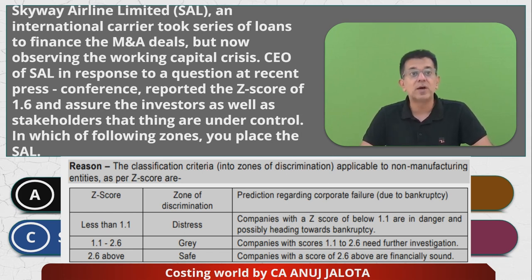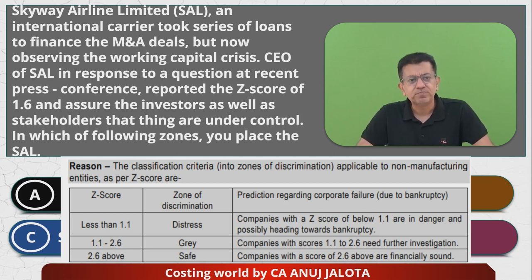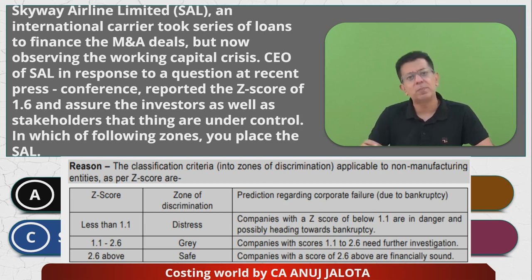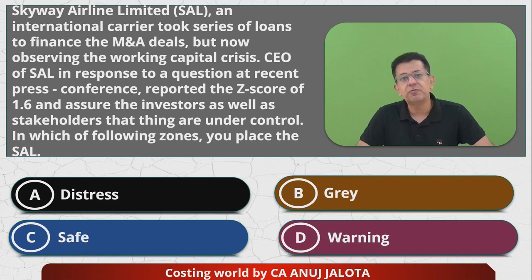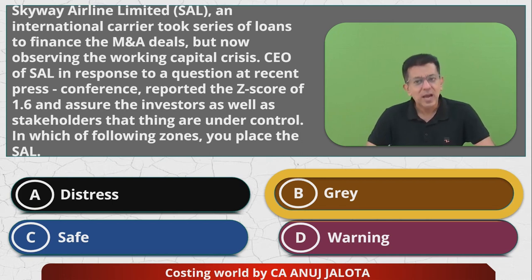This company's score was 1.6. A score of 1.6 means you are in the grey area — not in danger right now, but further investigation will be required. Out of the four options, the answer should be B: grey area. That's the correct one.